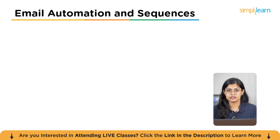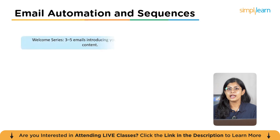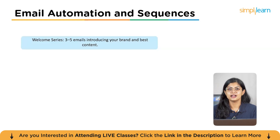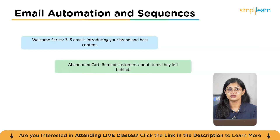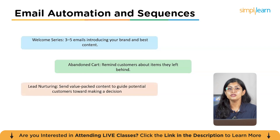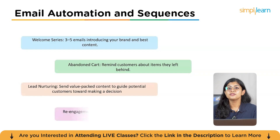Email automation allows you to send relevant emails at the right time without manual work every time. Essential automation sequences include: a welcome series — 3 to 5 emails introducing your brand and best content; abandoned cart emails — reminding customers about items they left behind; lead nurturing — sending value-packed content to guide potential customers toward making a decision; and a re-engagement series — incentivizing dormant users to return with special offers or updates.